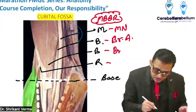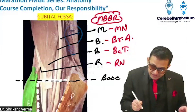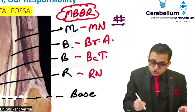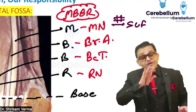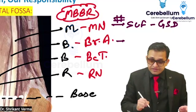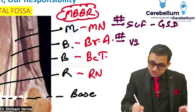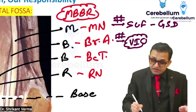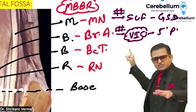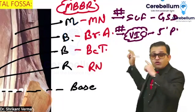Clinically, in a supracondylar fracture the median nerve is damaged and there is gun stock deformity. When the brachial artery is involved, ischemia occurs — Volkmann's ischemia — and there are the five Ps: pain, pallor, paresthesia, and so on.